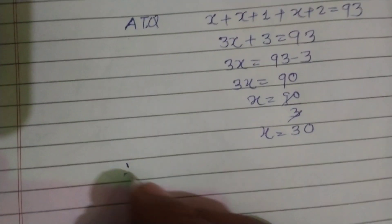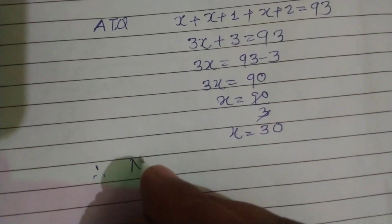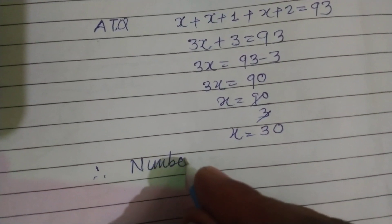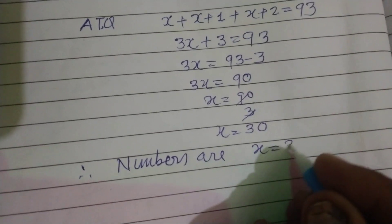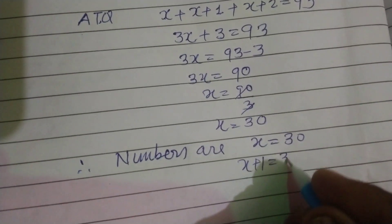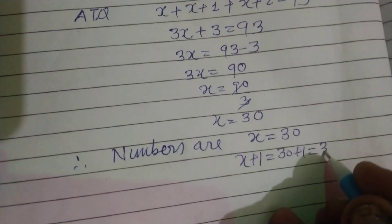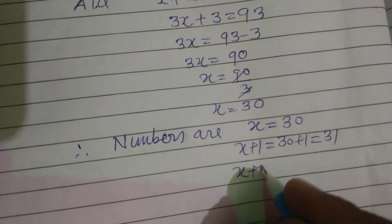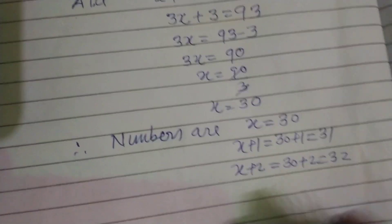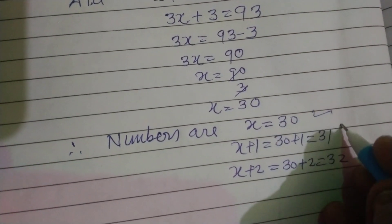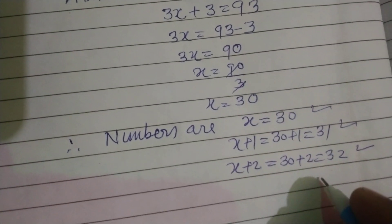So the value of x is 30. Therefore, the numbers are x which is 30, x plus 1 which is 31, and x plus 2 which is 32. So the numbers are 30, 31, and 32 respectively.